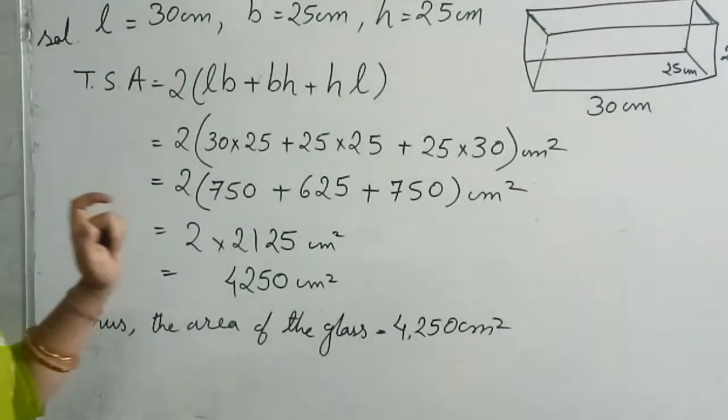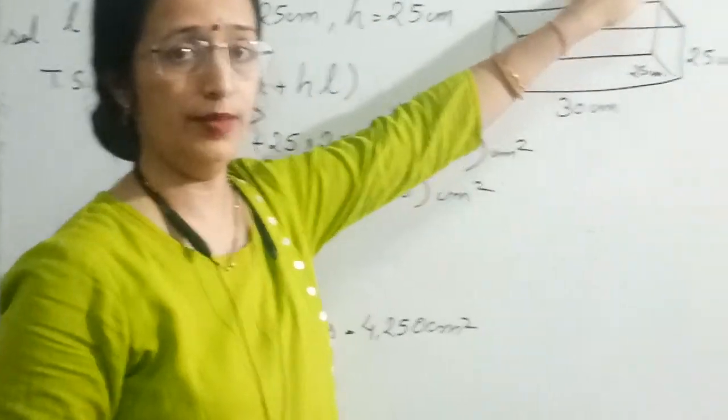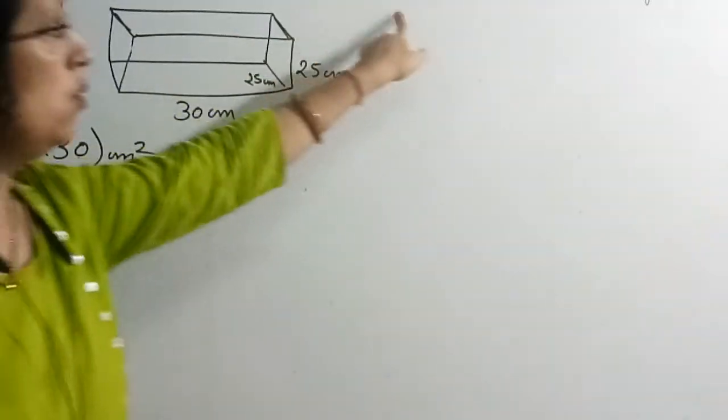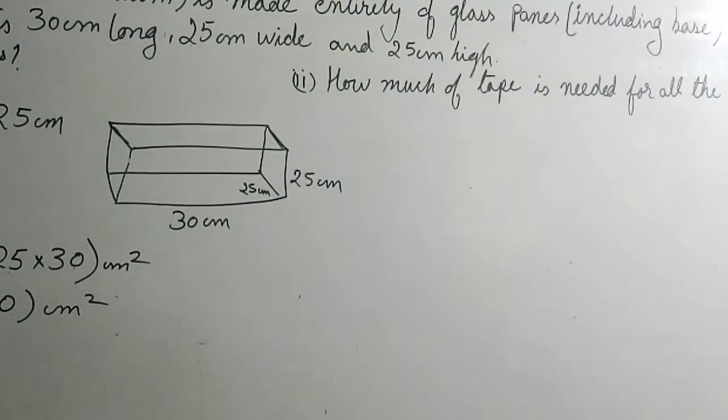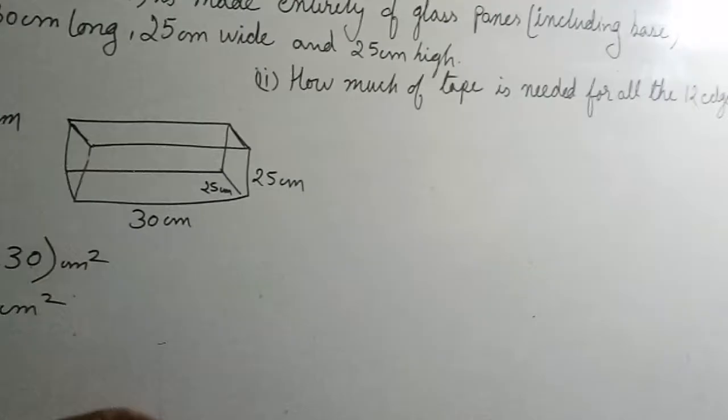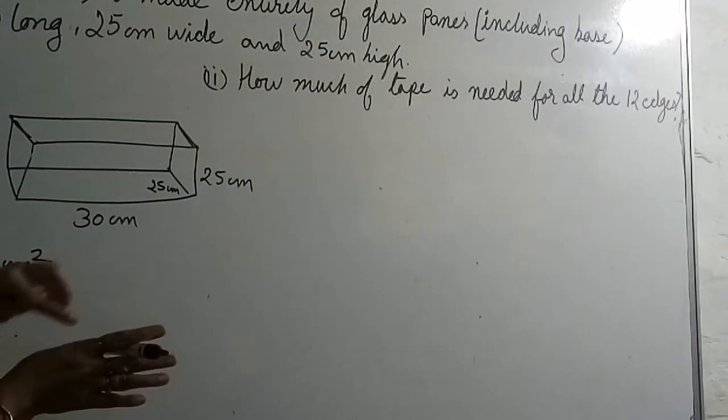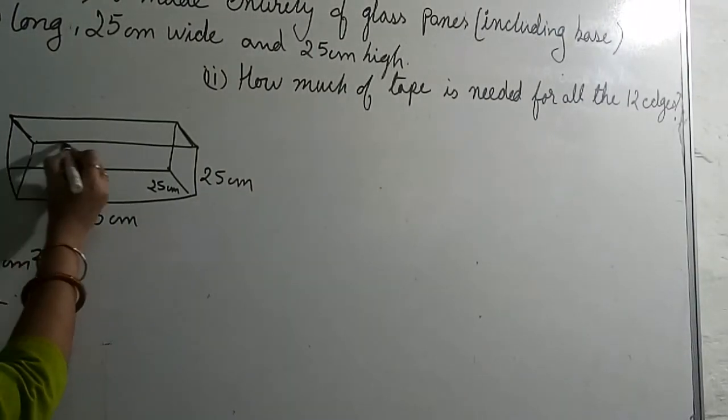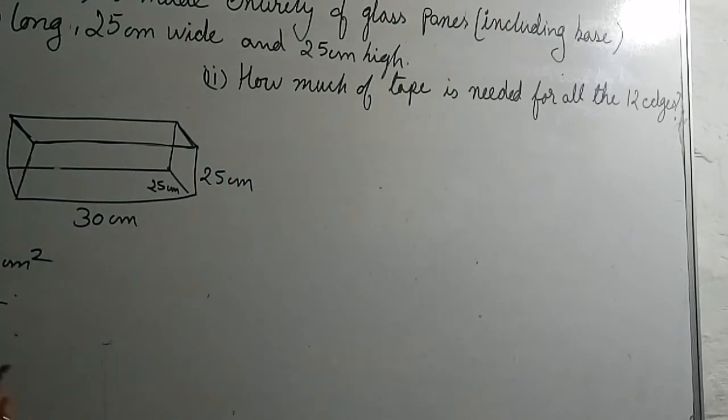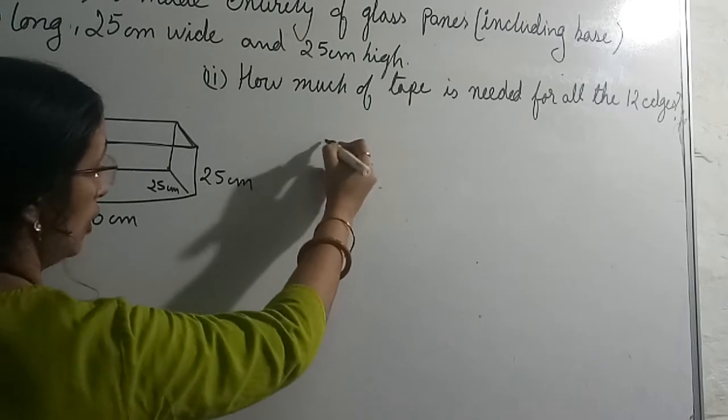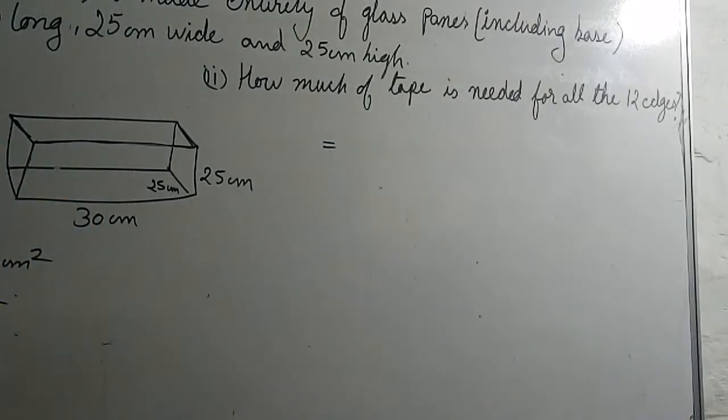Now we will do the second part. Look here. They are asking how much tape is needed for all the 12 edges. Now tape means that all your edges will be counted. Clear? Now we will use the logic here. What logic are we going through? See here.